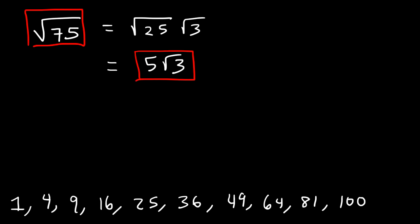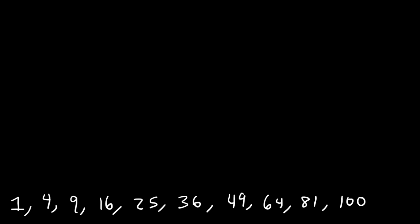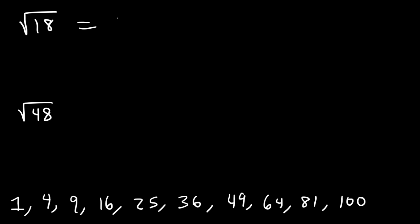Let's look at more examples — you want to master this technique. Simplify the square root of 18 and the square root of 48. You may want to pause the video and try these problems yourself. For 18, what perfect square goes into it? 9 goes into 18 two times, so write 9 times 2. The square root of 9 is 3, so the square root of 18 simplifies to 3 square root 2.